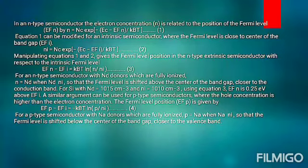A similar argument can be used for p-type semiconductors, where the hole concentration is higher than the electron concentration. The Fermi level position is given by an equation for a p-type semiconductor. When acceptors N_A are fully ionized, equal to N_A, the Fermi level is shifted below the center of the band gap, closer to the valence band.